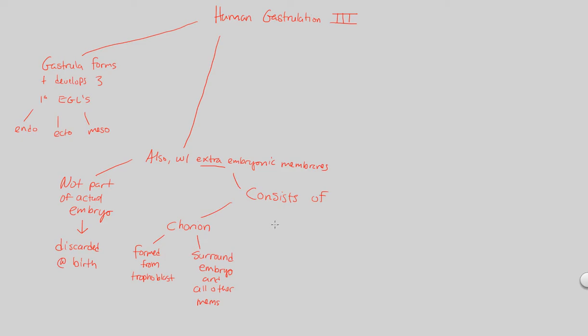Another important extraembryonic layer is the amnion, also formed from the trophoblast but more interior than the chorion. This encloses the embryo in amniotic fluid. The embryo is constantly within an aqueous environment. This is a big evolutionary outcome related to our movement onto land that I'll talk about when we discuss the purpose of all this.